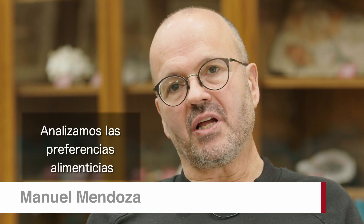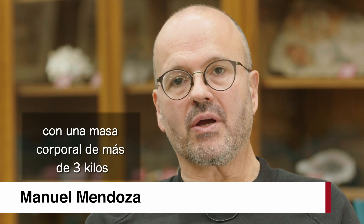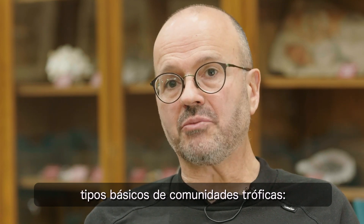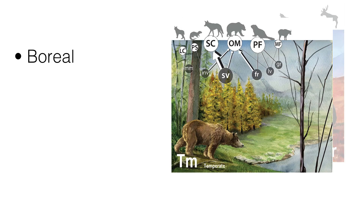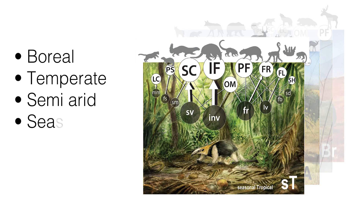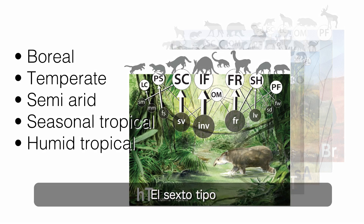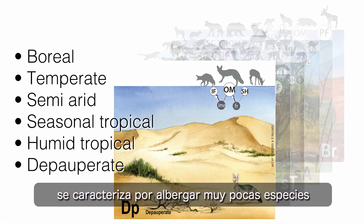We analyzed the feeding preferences of all terrestrial mammals with more than three kilograms of body mass, and we found that there are six basic types of trophic communities: boreal, temperate, semi-arid, seasonal tropical, humid tropical, and the pauperate — which is characterized by having a very low number of species.